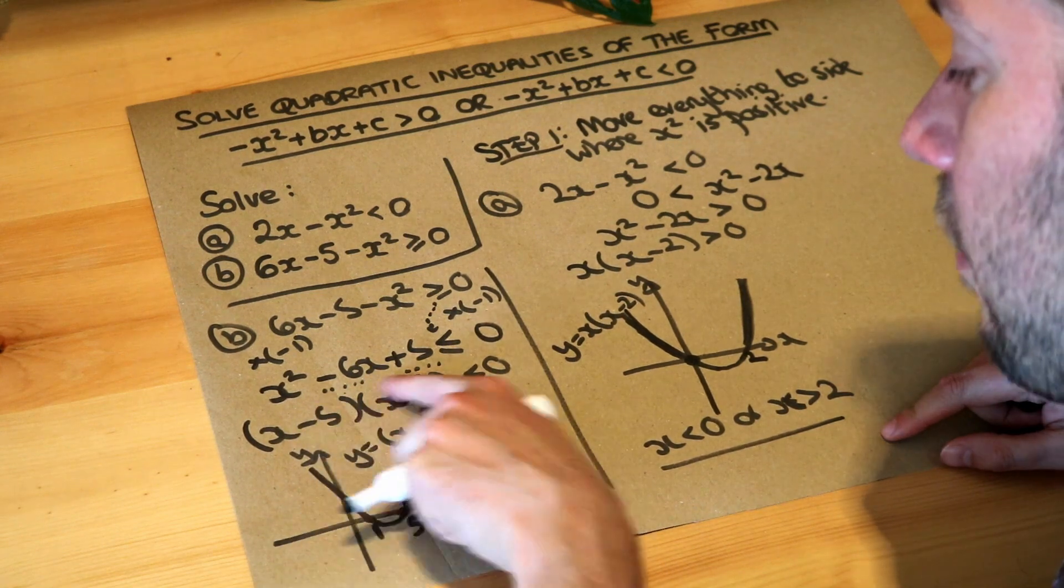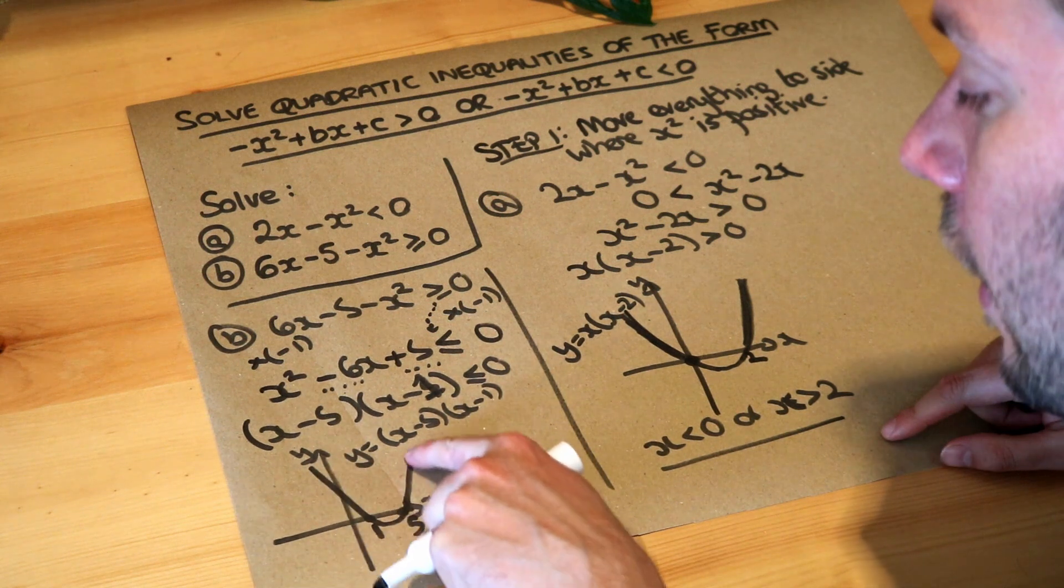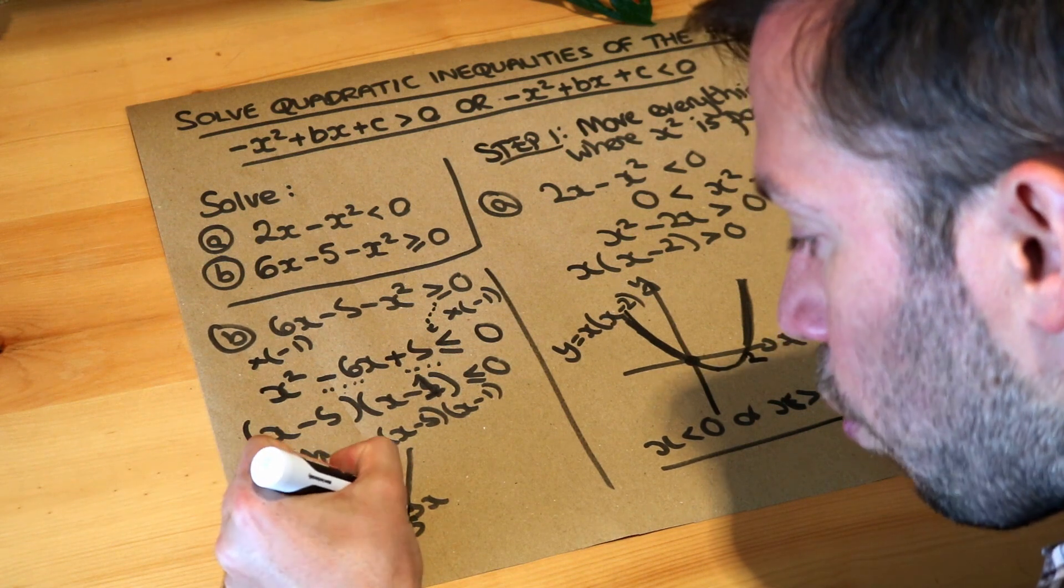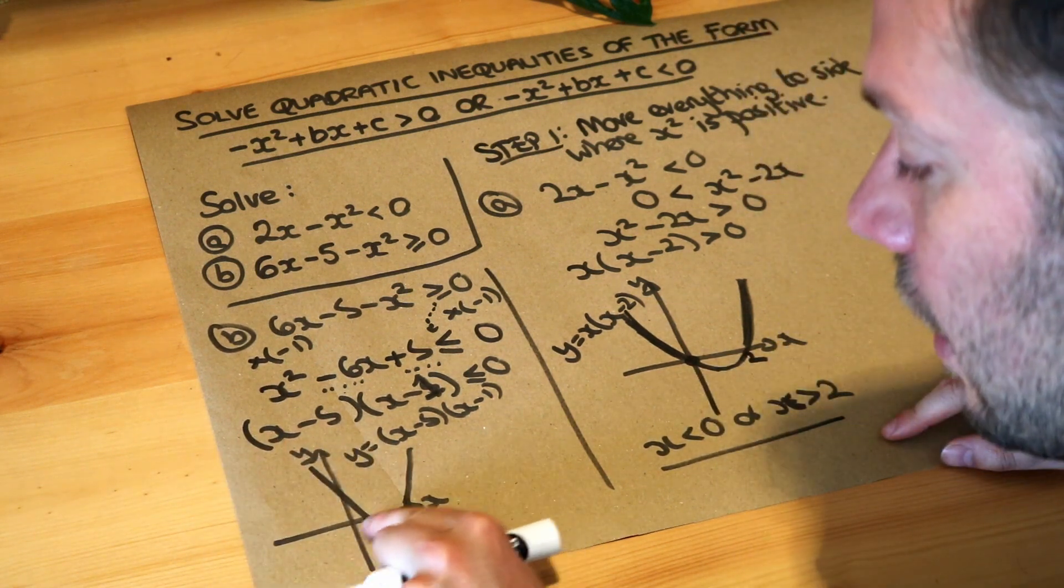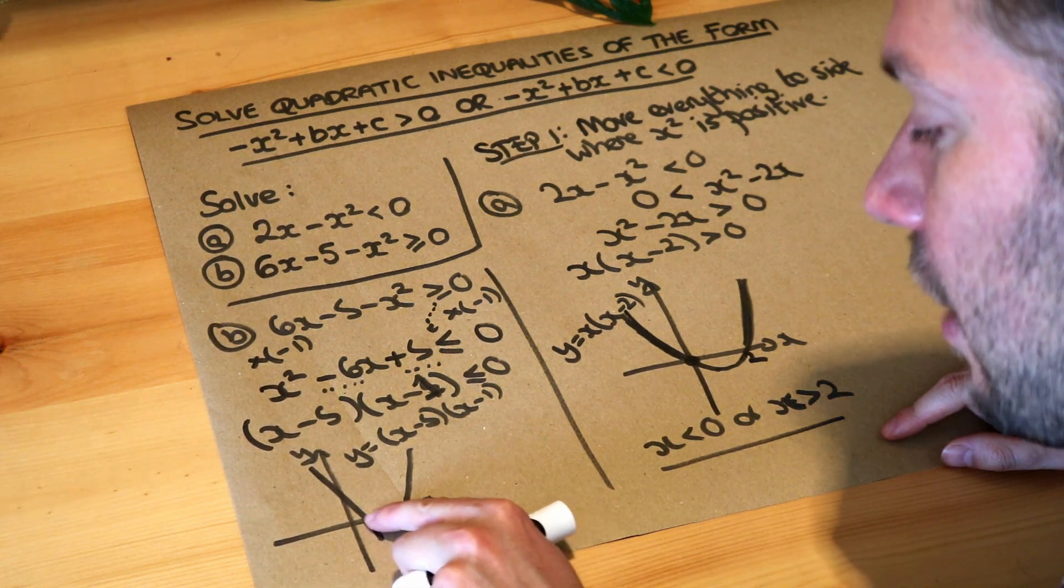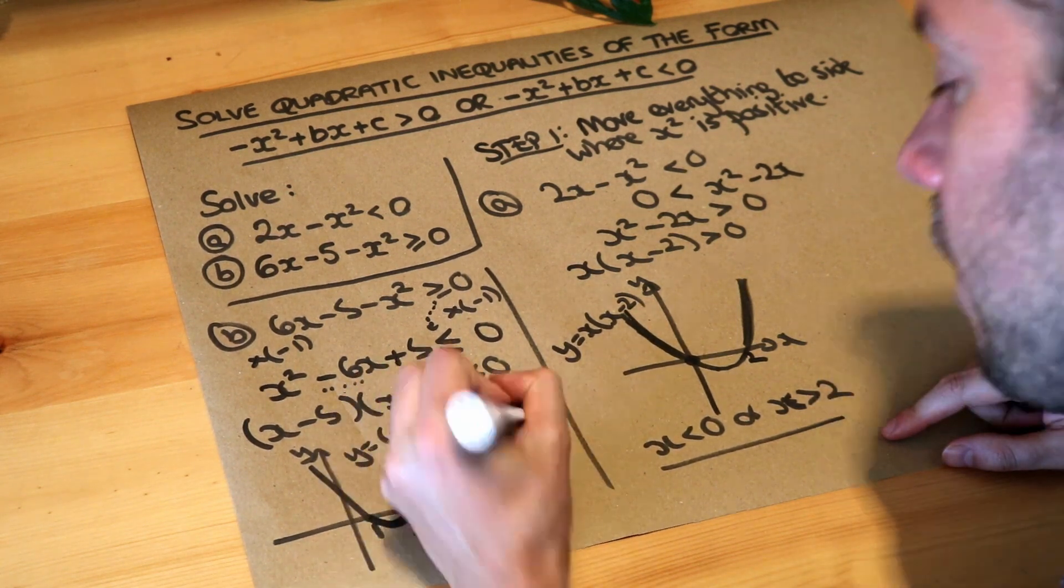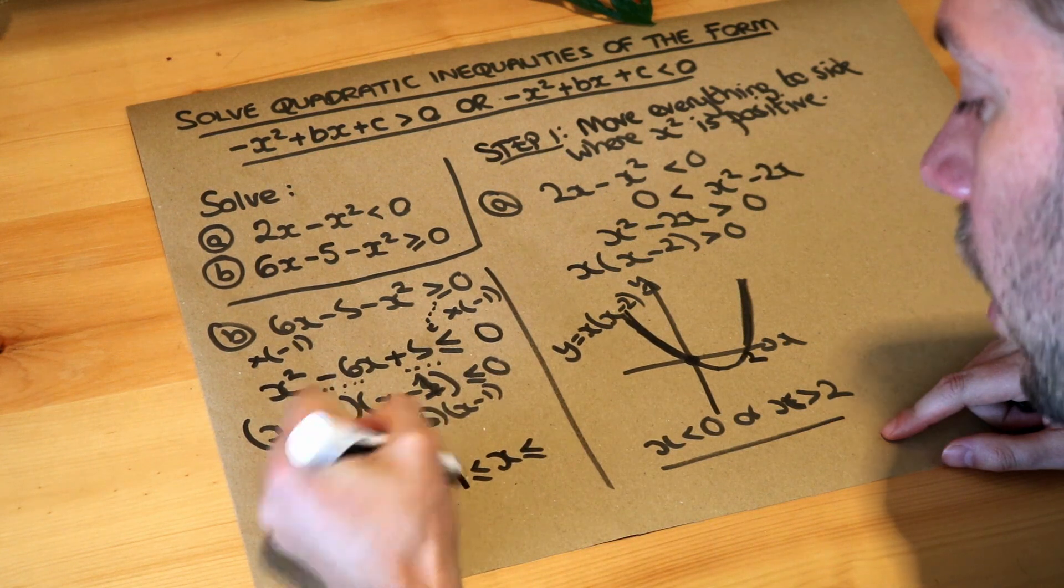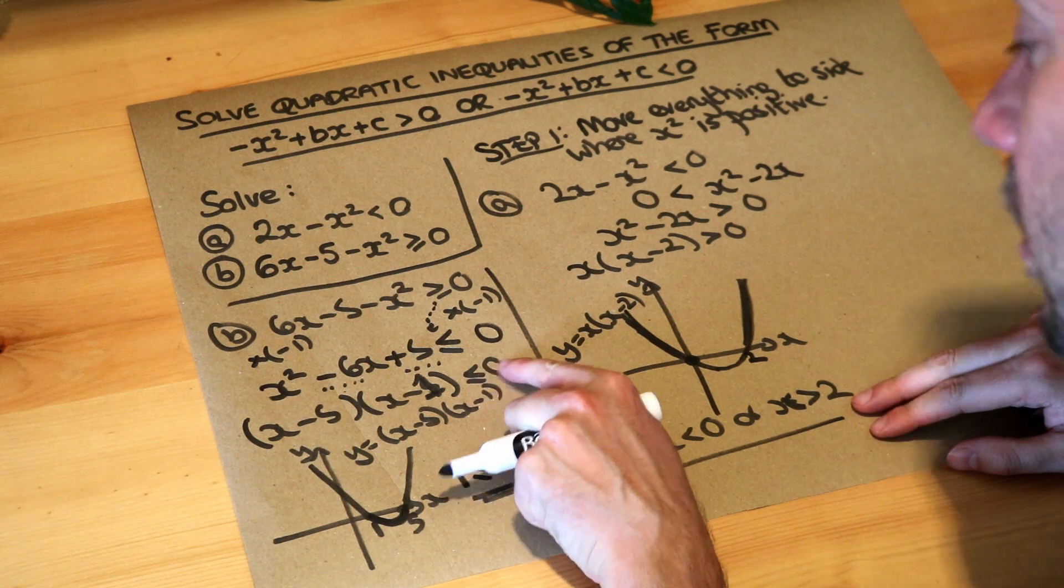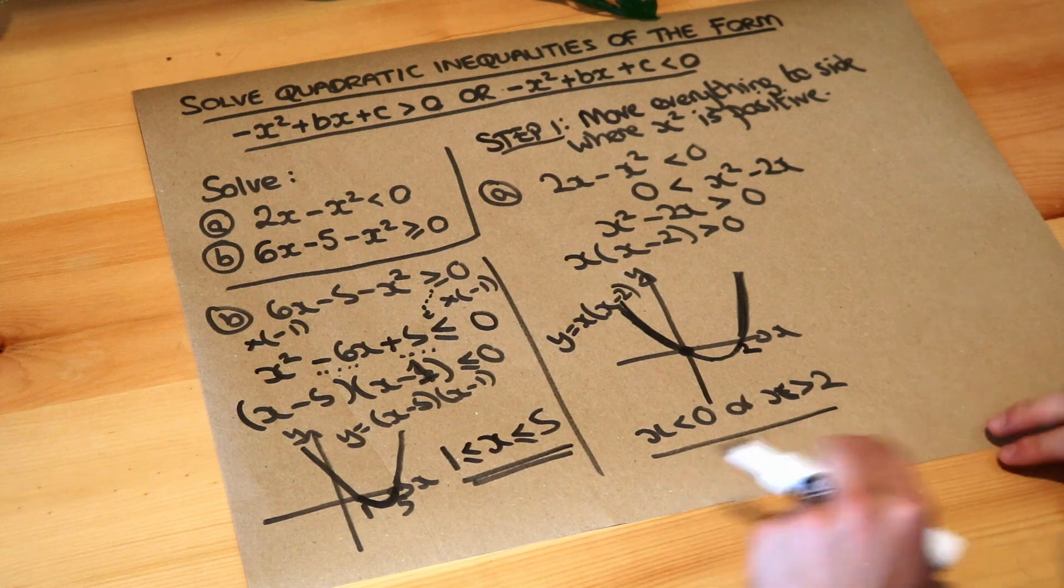Now we're saying the y value, y is less equal to zero. Where on this line is the y value less equal to zero? Well it's this middle bit here. So we can see the y value is negative in this region here. What can we say about the x values in this region on this line? Well we can see all the x values in this part of the line are between one and five. So x is between one and five and that is the final answer. Remember if that's less than or equal to zero these need to be less than or equal to as well for consistency.